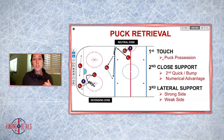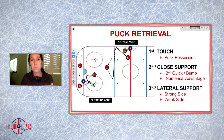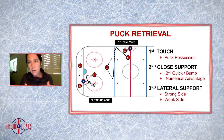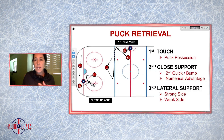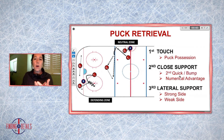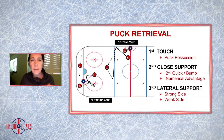Number two, we need somebody to be in close support — close support to create that numerical advantage, providing the person with the first touch either a bump support play, or a second quick to be able to pick up a loose puck.